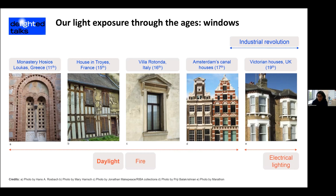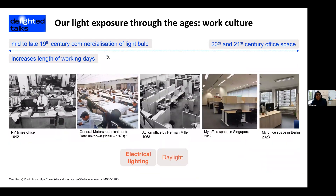Through the ages our windows got bigger — we had bay windows with the Victorian houses in the 19th century. With the industrial revolution, manufacturing glass and being able to mass produce it really helped us have bigger windows. Predominantly during this time our light exposure would have been daylight; we were working outside for most of the time, with candlelight or kerosene lamps at night. It's only towards the 19th century that electrical light came into our domain.